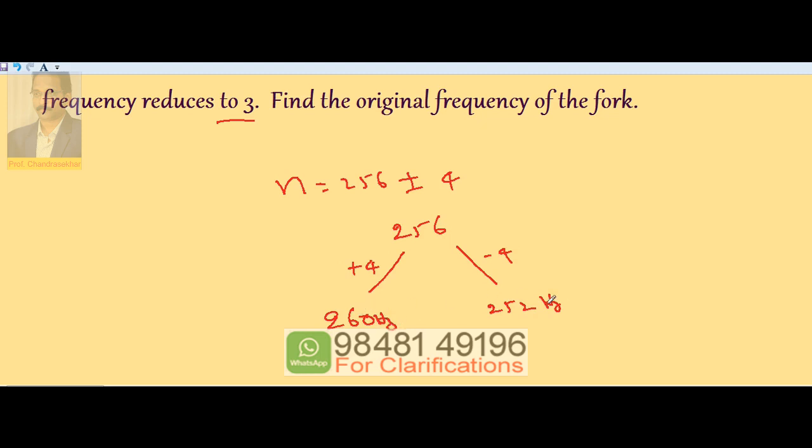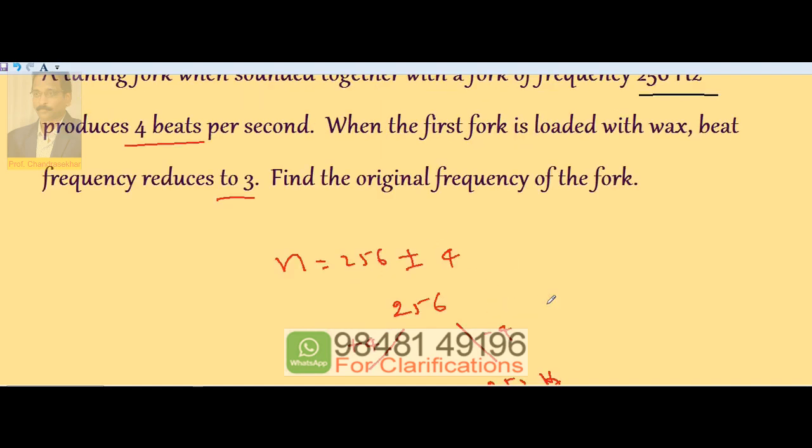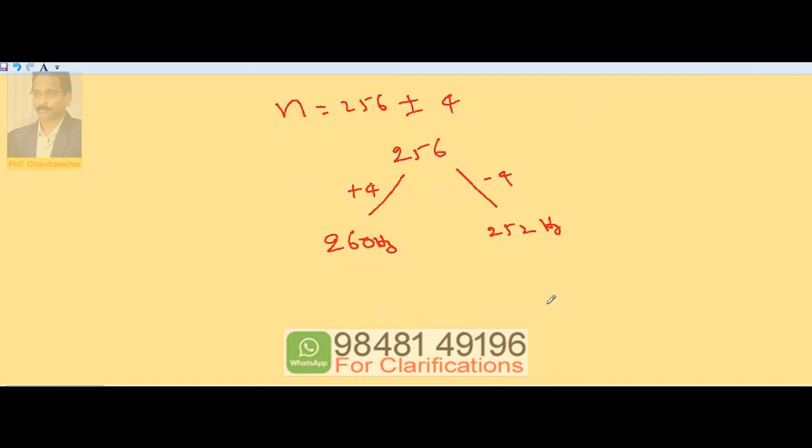When the fork is loaded with wax, beat frequency reduces to 3. Once wax is loaded, frequency decreases. The change from 4 to 3 represents a 1 unit change in frequency. After loading, the possible frequencies are 259 or 251.